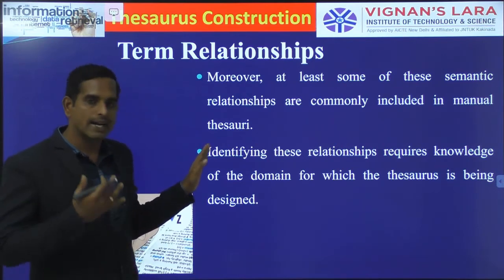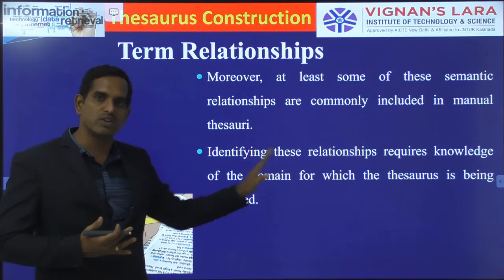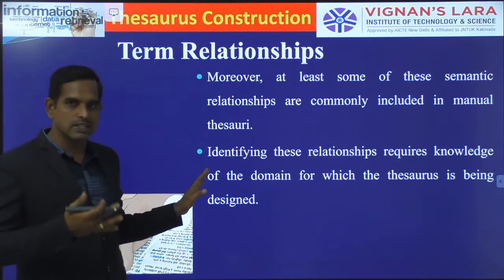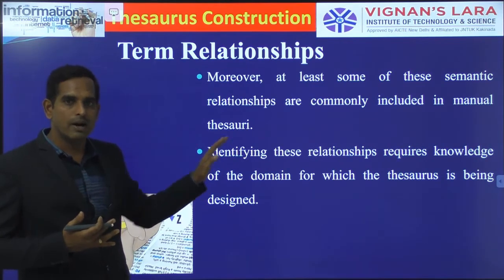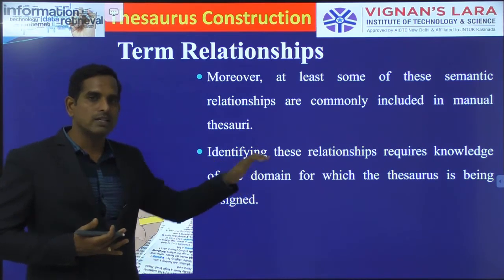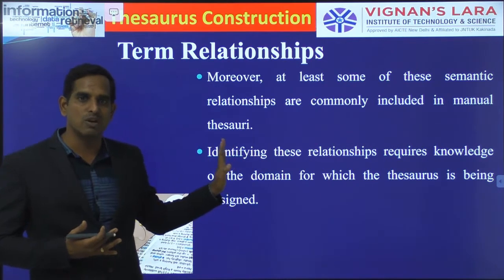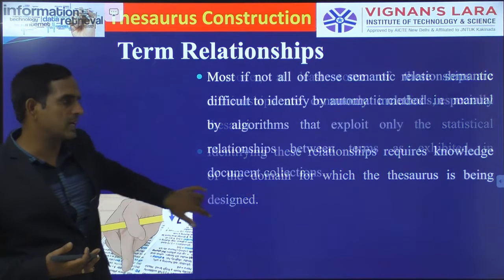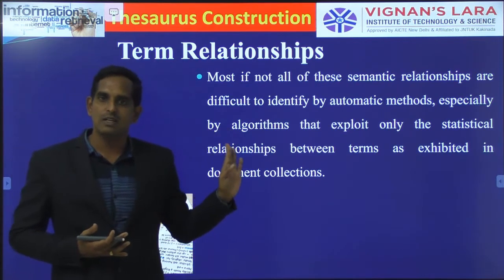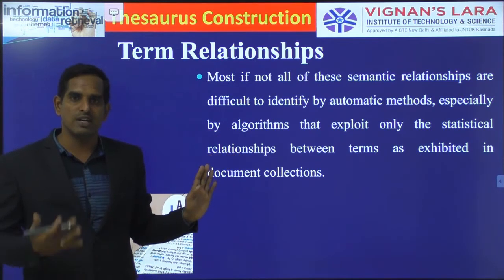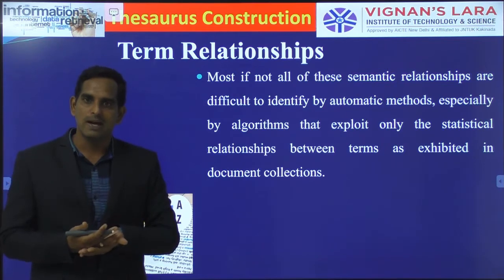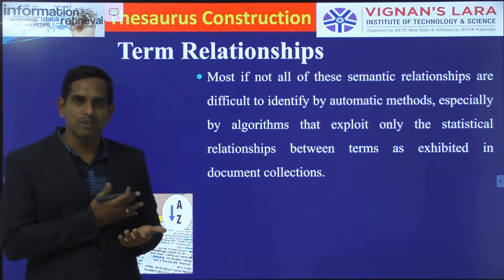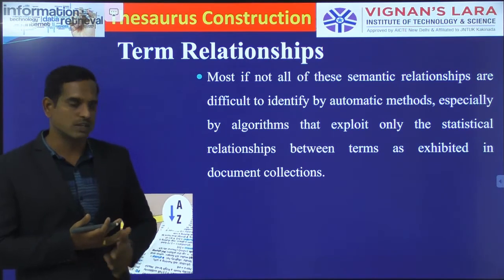Implementing and identifying those relationships requires knowledge of your domain — the thesaurus knowledge domain. The relationship between terms has to be known before construction of the thesaurus. Implementing this relationship between terms is somewhat tough for automatic methods because it is more dependent on the application, so it is usually done manually.